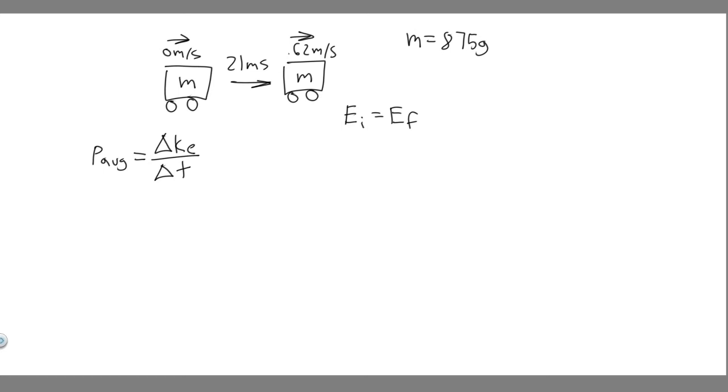The change in kinetic energy over the change in time. Kinetic energy, as we just went over, is 1/2 mv². So if we want the change in it, the only thing changing is v. It's 1/2 m v_final² minus 1/2 m v_initial².